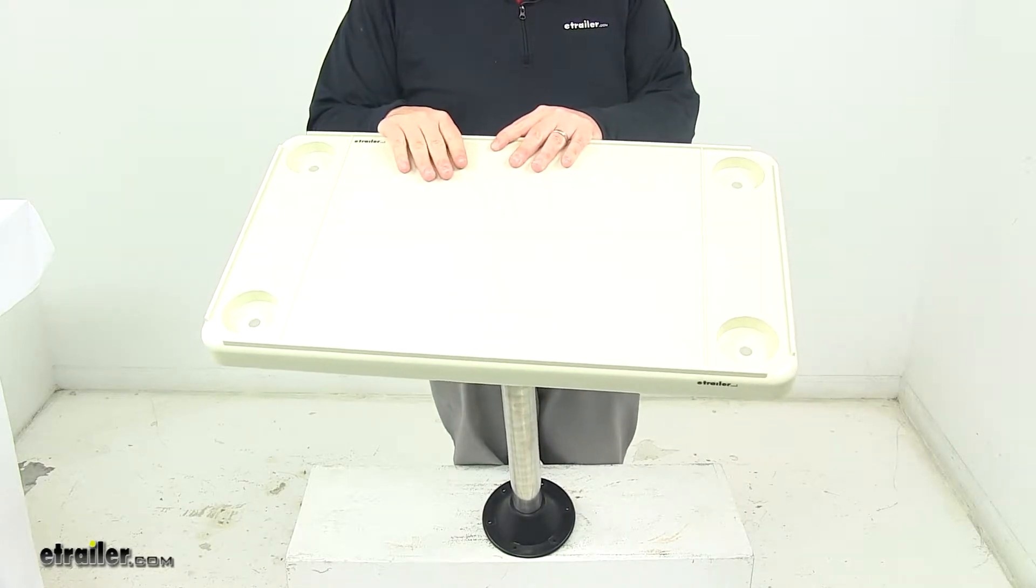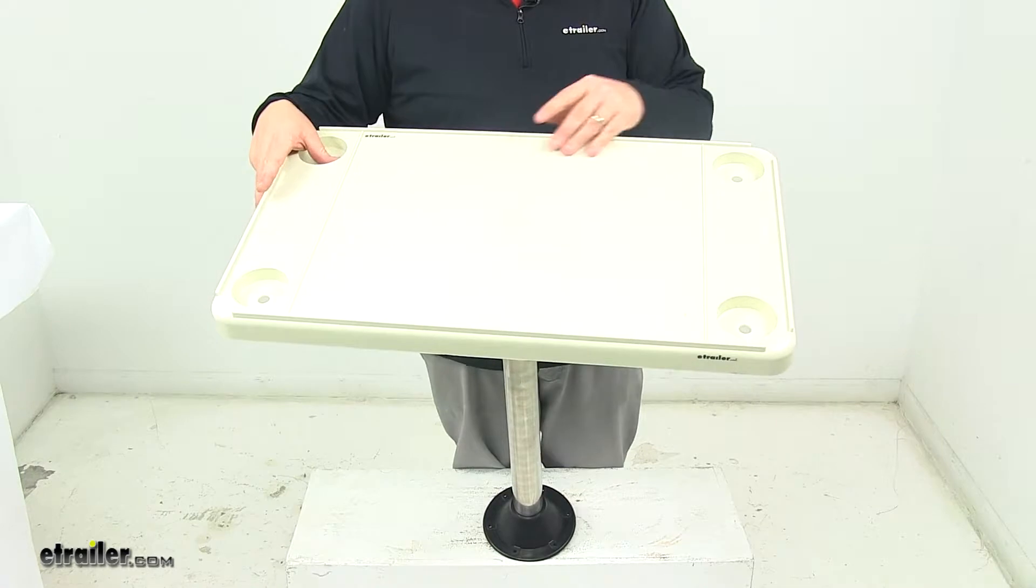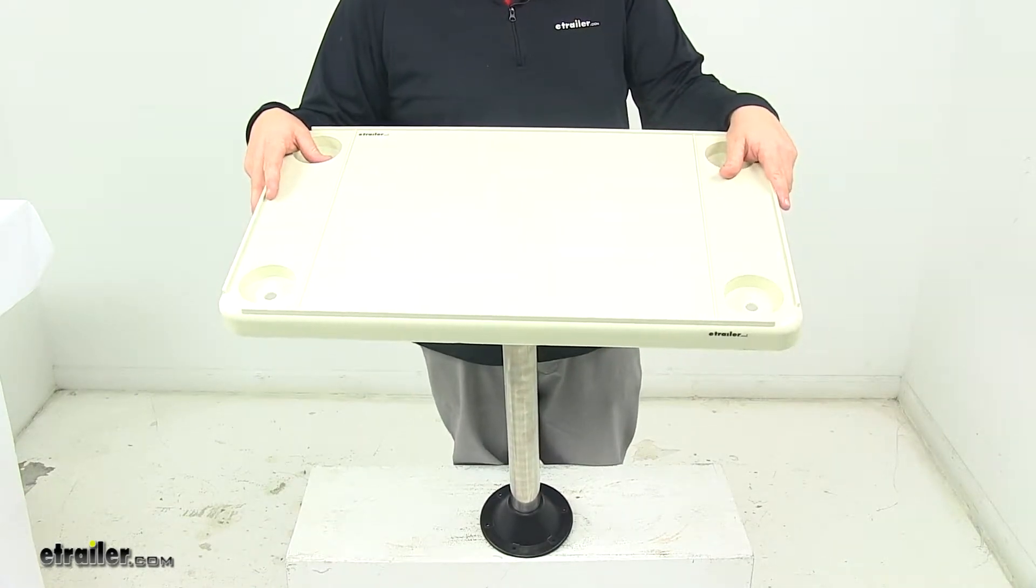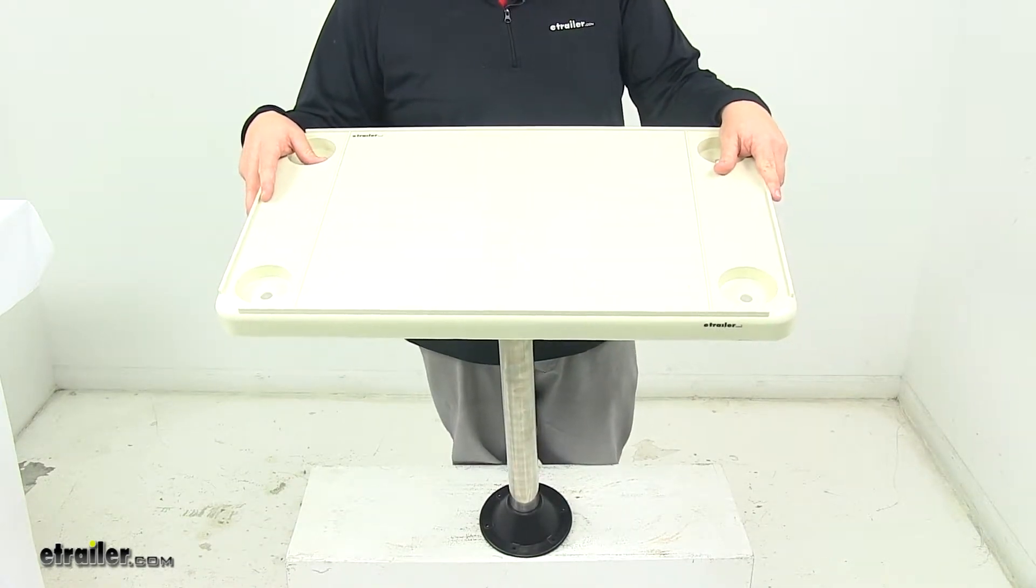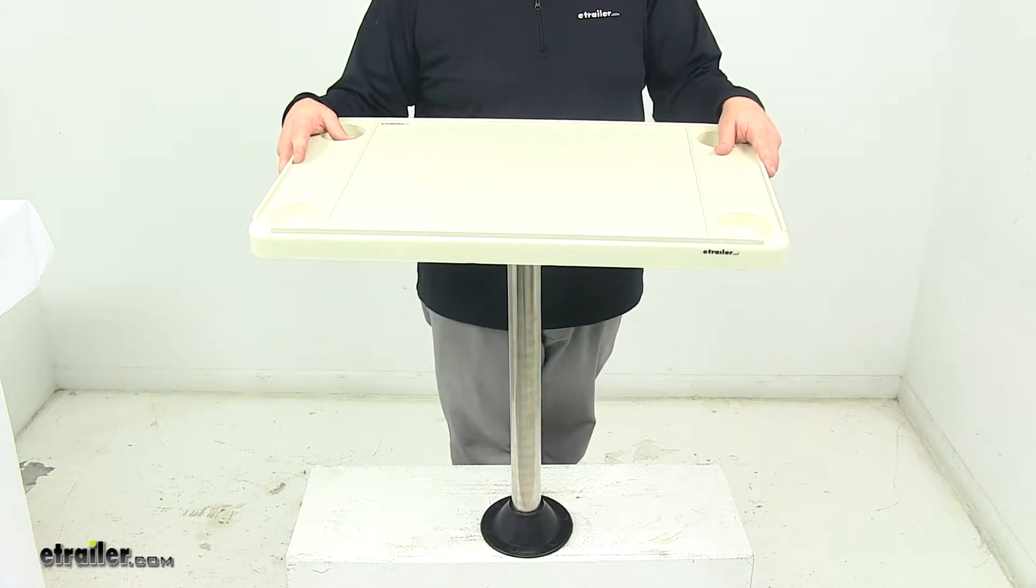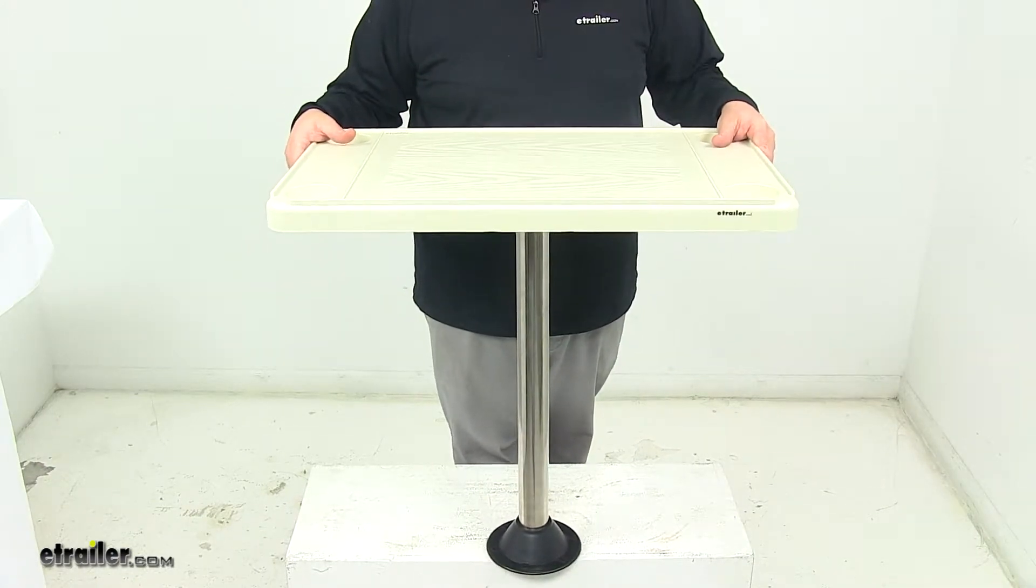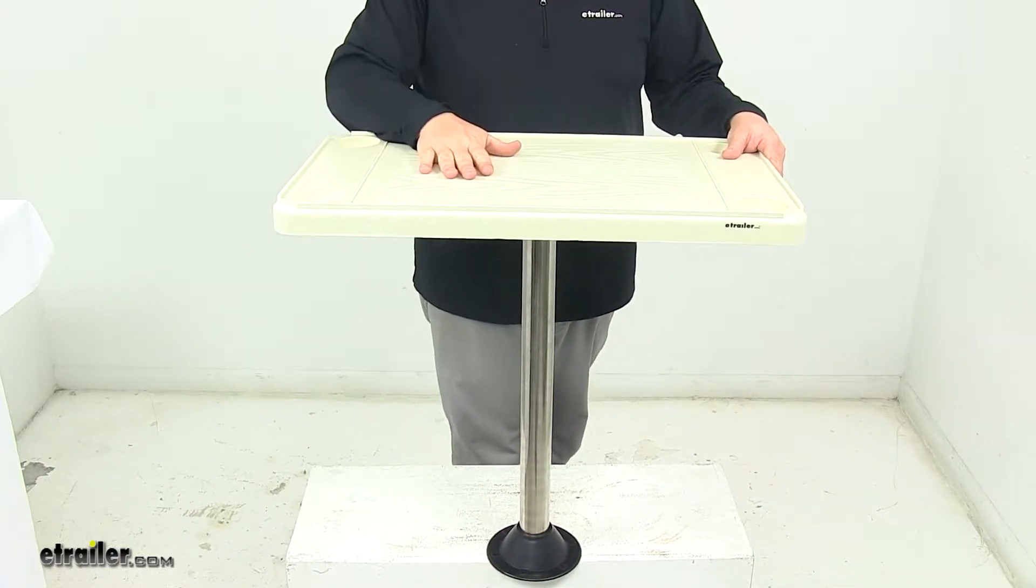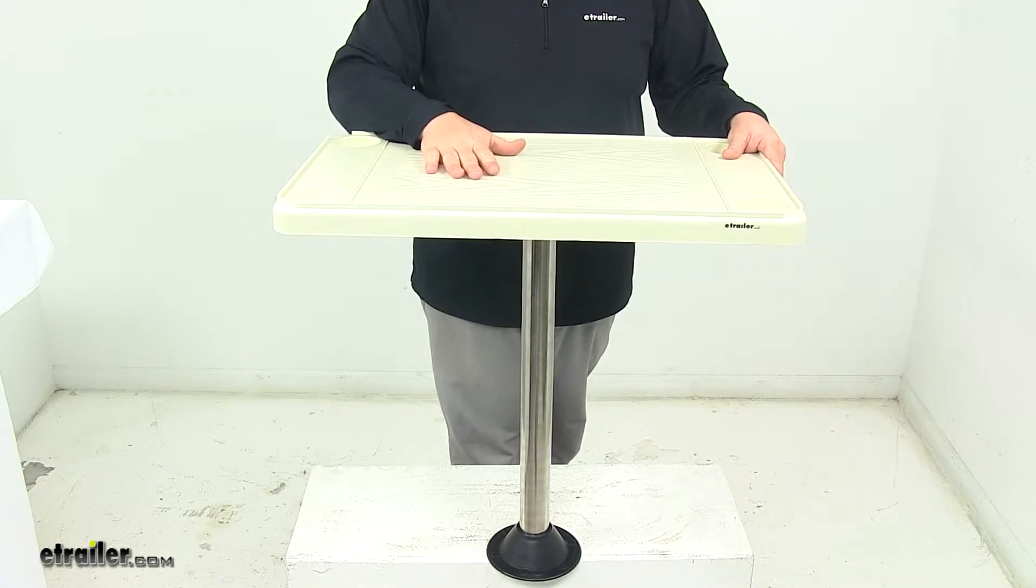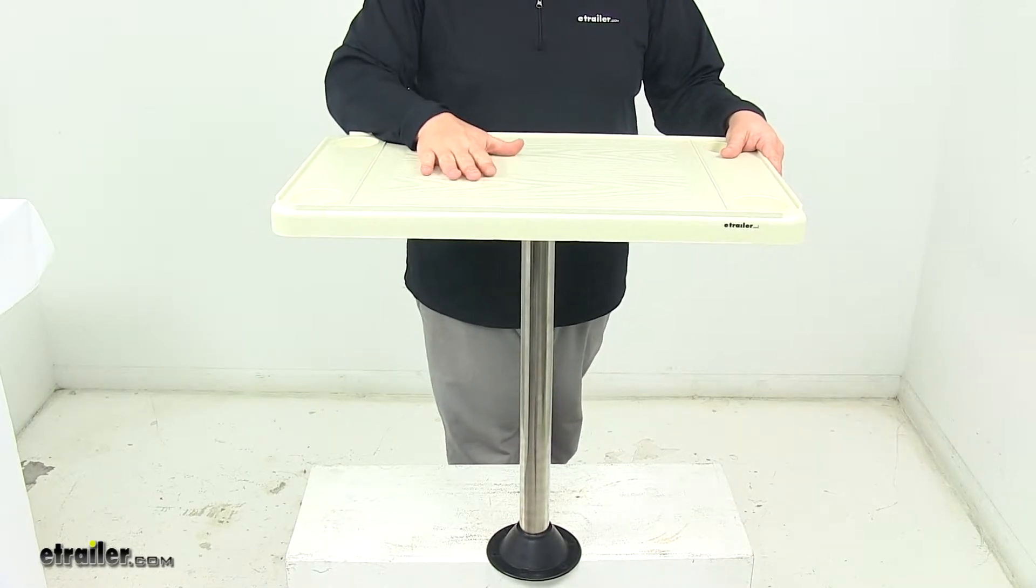This table can be recessed flush-mounted with part number 315-DSH-KF, or surface mounted with part number 315-DSH-KS. This one that I'm showing you today is the flush mounted, or excuse me, it's the surface mounted option.